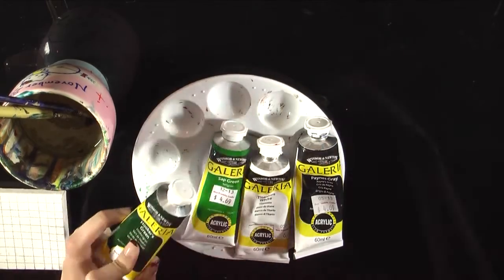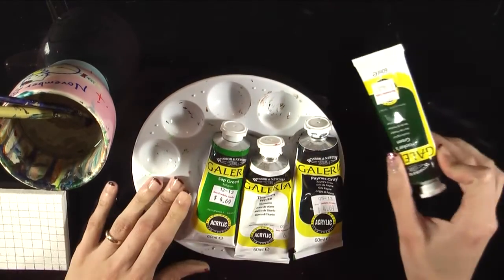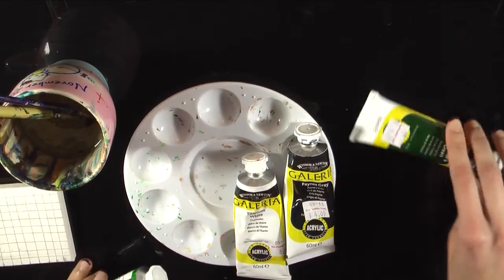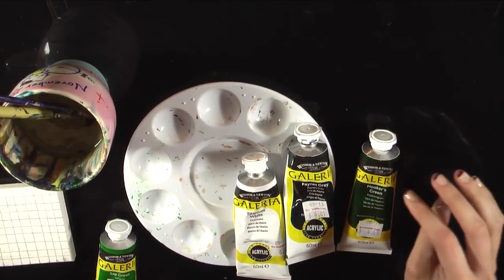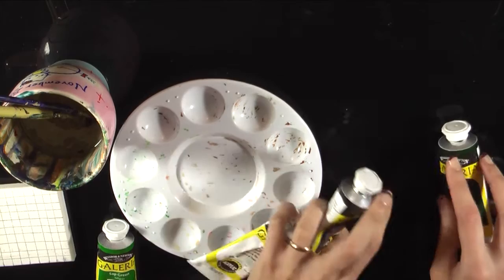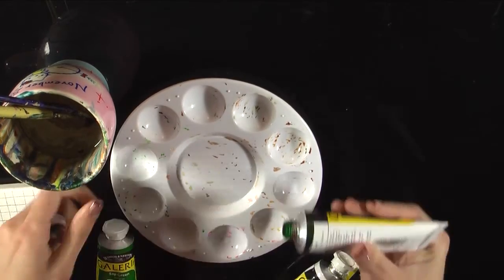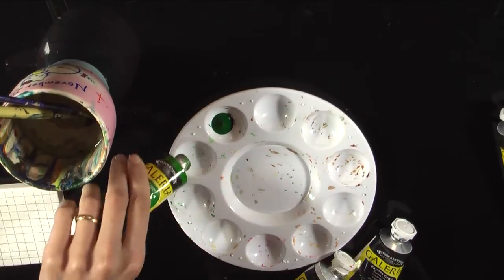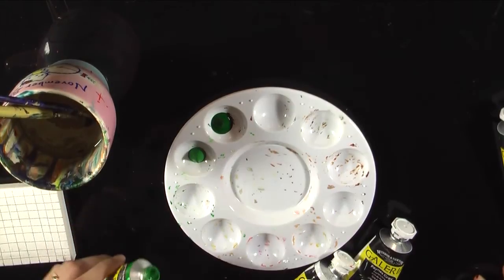Don't worry about what I just said because you can just go ahead and look at the description of the video and check out the supply list there. Okay, so let's go ahead and mix our colors. So first we're going to lay out a bit of our hooker's green, then a bit of sap green. And now in the next pot, I'm going to do sap green.